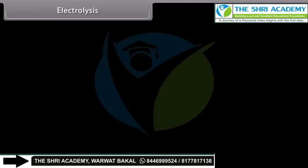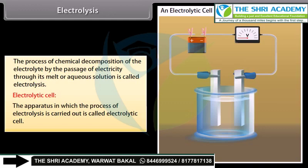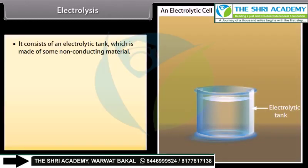Electrolysis is the process of chemical decomposition of the electrolyte by the passage of electricity through its melt or aqueous solution. The apparatus in which the process of electrolysis is carried out is called an electrolytic cell. It consists of an electrolytic tank which is made of some non-conducting material.